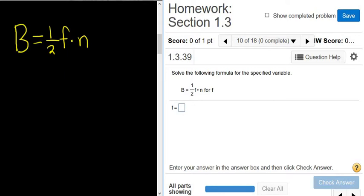We can do it in two steps or one step. Let's do it in two steps. To find f, it's being multiplied by 1 half. So to clear the fraction, we can start by multiplying both sides by 2.